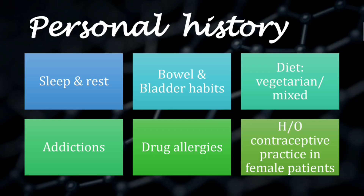After family history comes personal history about the patient. Ask about sleep and rest cycle adequacy, bowel and bladder habits, diet (whether vegetarian or mixed), addictions if any, drug allergies if any, and history of contraceptive practices — the last one only in the case of females.